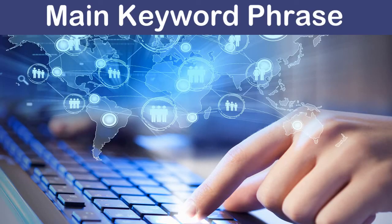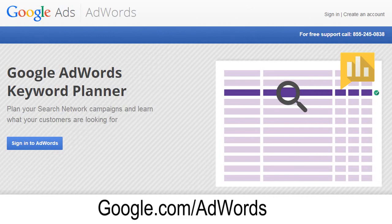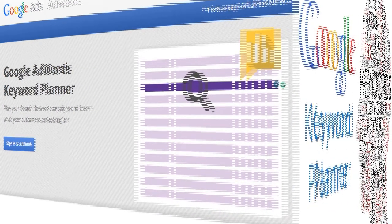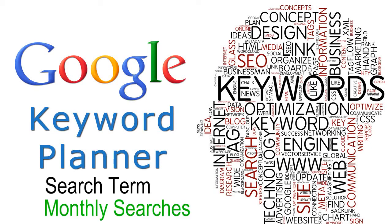You select a main keyword phrase by finding out what keywords people are searching for and how often. This is called keyword research, and you can do it for free using Google's Keyword Planner. We show you how to use it in our Keyword Planner video. Google's Keyword Planner allows you to enter a search term to see how many people are searching for it on a monthly basis.